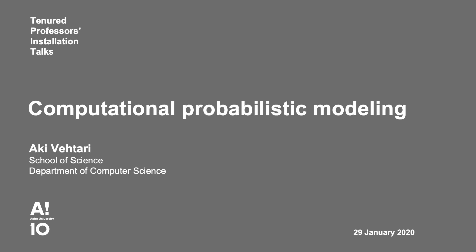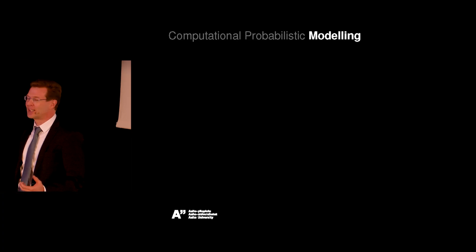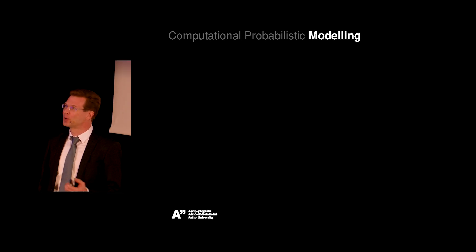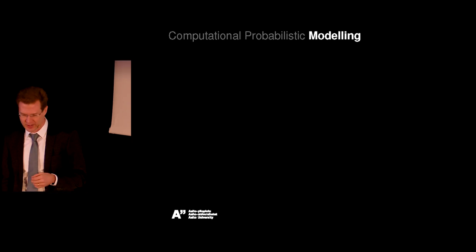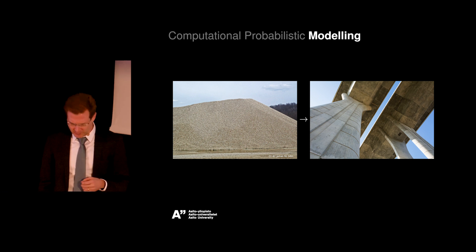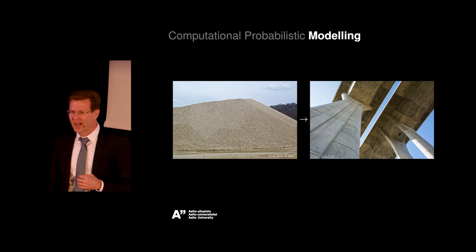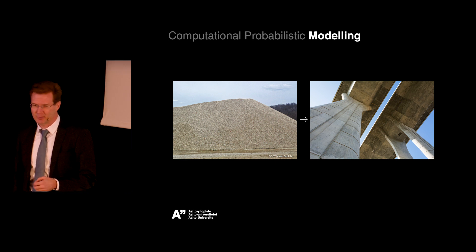I briefly describe what is in computational probabilistic modeling. I start with the modeling. A model is a simplification of nature. I have two examples from my own research. The first one is from the beginning of my career, predicting concrete quality.